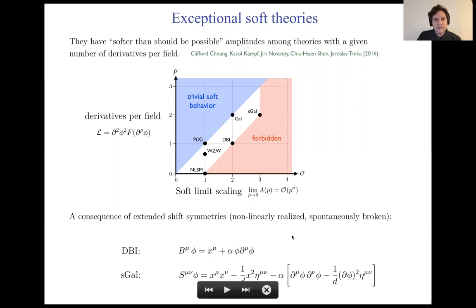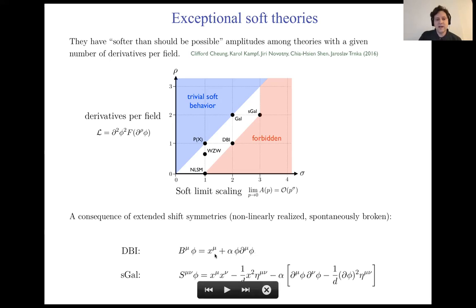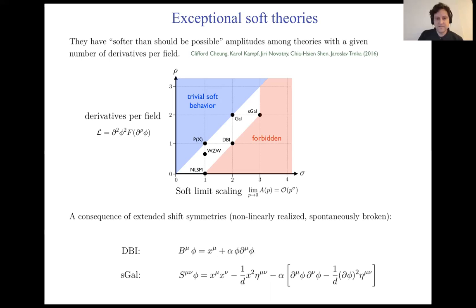You can think of this exceptional soft behavior as a consequence of extended shift symmetries these theories have. DBI has an extended shift symmetry that goes like a single power of the space-time coordinate x along with non-linear terms. The special Galilean has an extended shift symmetry that goes like two powers of the space-time coordinates along with non-linear stuff.